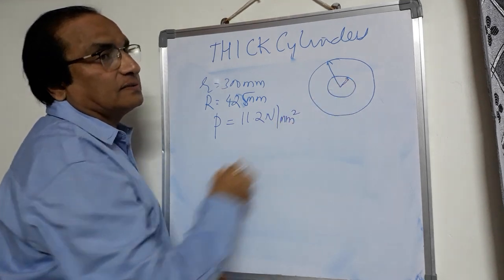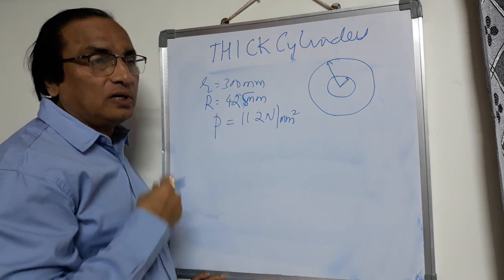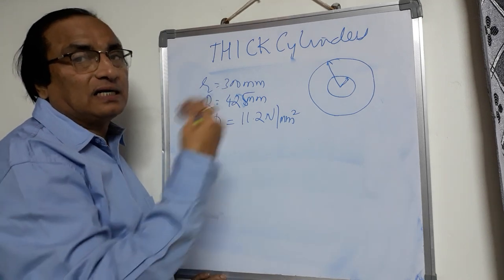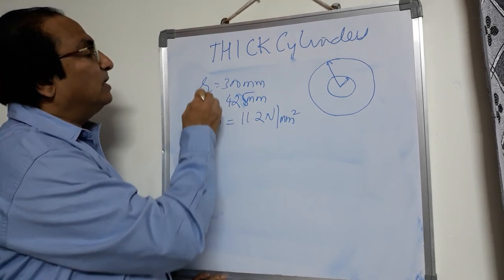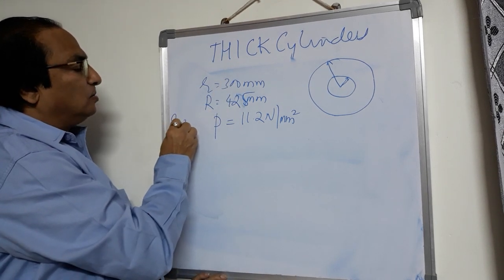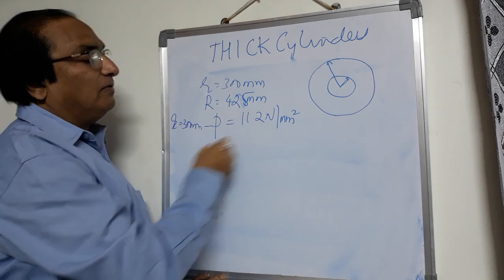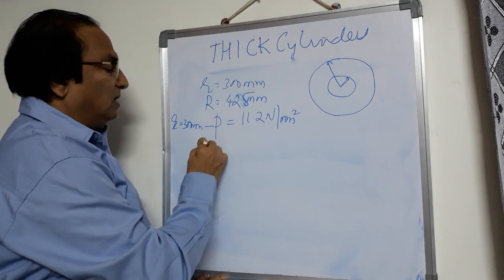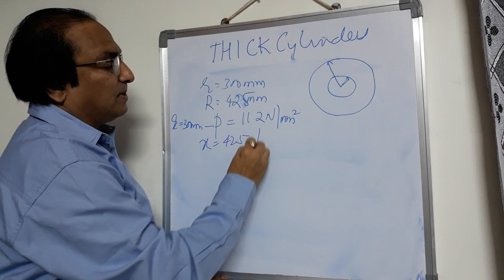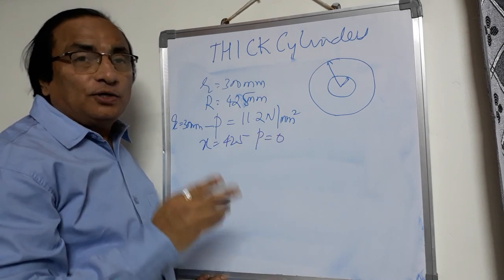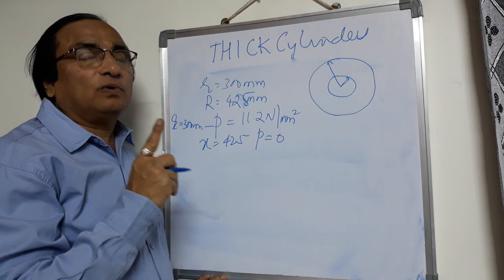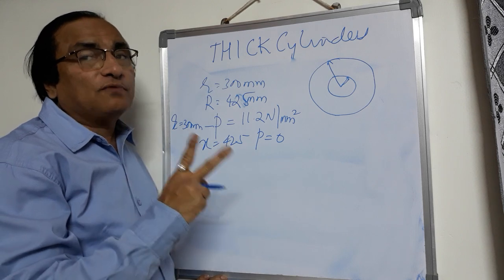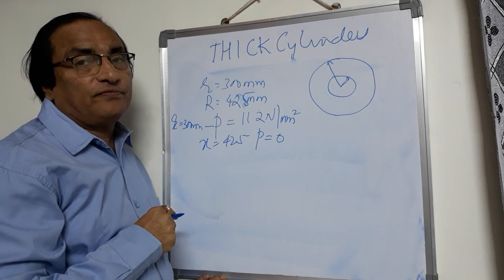This pressure is on the inner face, because pressure is maximum on the inner face and goes on reducing as you go to the external face — it will become zero. So when R is equal to 300 mm, the pressure is 11.2 Newton per mm square. On the outer face, when x is equal to 425 mm, the pressure will be zero. You need to find out always in thick cylinders two things: one is A and B, the Lamy's constants. To find out two constants, you need two equations, so you will be using these two equations to find out the value of A and B.